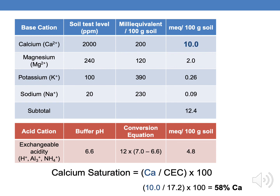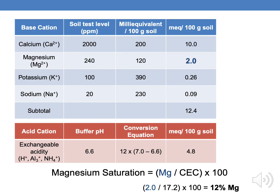We can also calculate calcium saturation by taking the milliequivalents of calcium divided by the CEC. In this example, 58% of our exchange sites would be calcium. We can do the same thing with magnesium — using 2 milliequivalents of magnesium — so that would be essentially 12% magnesium. These are the basic pieces of running through this, and hopefully that gives you a better understanding of what we're dealing with.